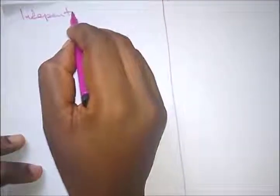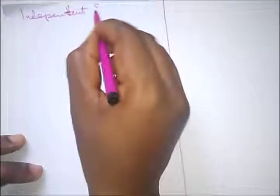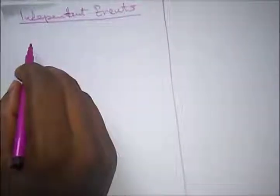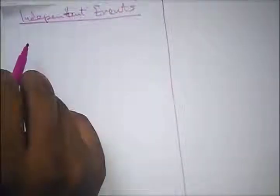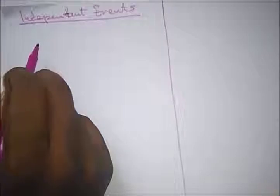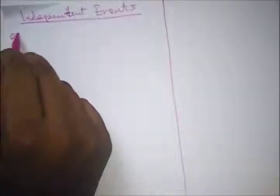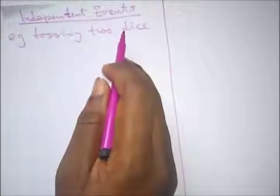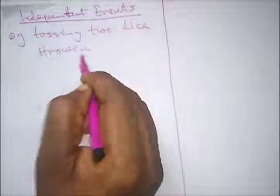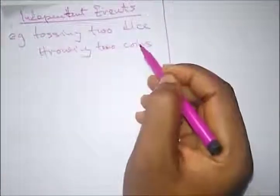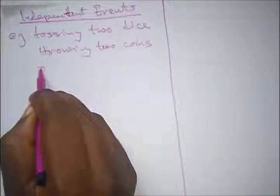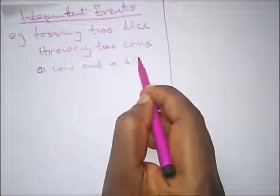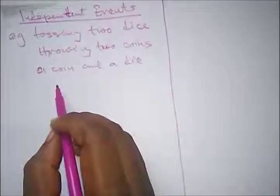We are specifically looking at independent events. There are different event types in probability: independent events, dependent events, mutually exclusive events, and compound events. Independent events are events where the probability of one does not influence the other. Examples include tossing two dice, throwing two coins, or throwing a coin and a die.